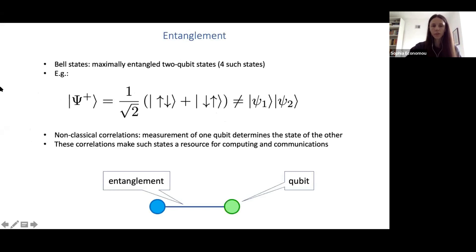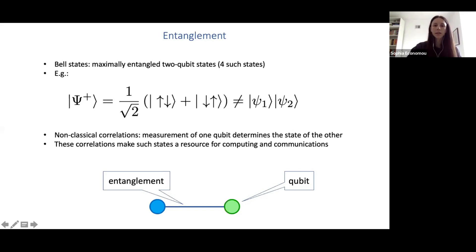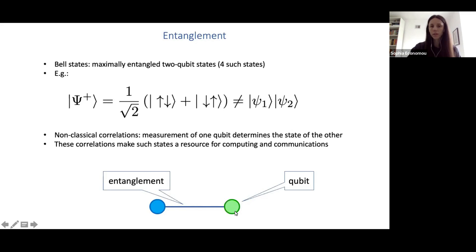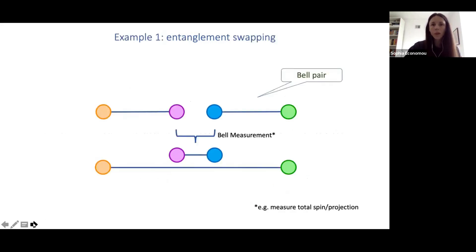I'll start with some motivating examples to see how the presence of entanglement followed by measurement can give important primitives in quantum information processing. I will introduce graph states and then talk about their applications: measurement-based quantum computing, where they first appeared, and then measurement-based quantum networks, specifically repeaters. I'll end with more physical considerations of how these states can be generated.